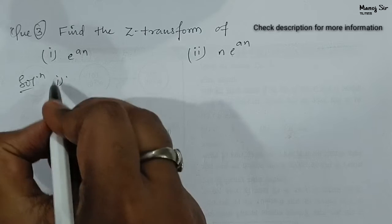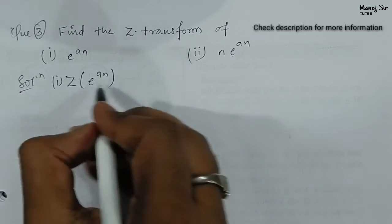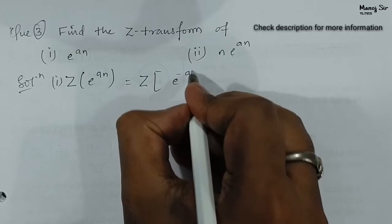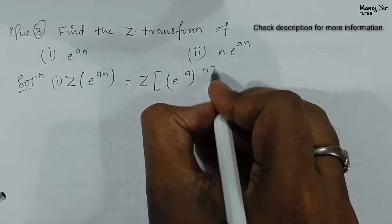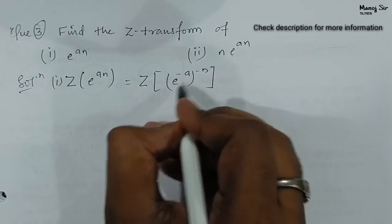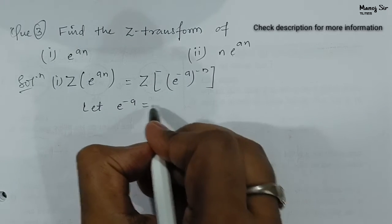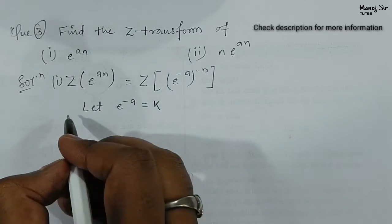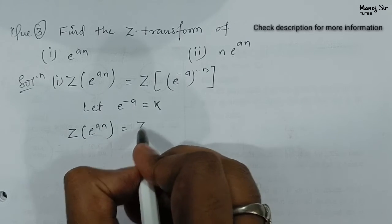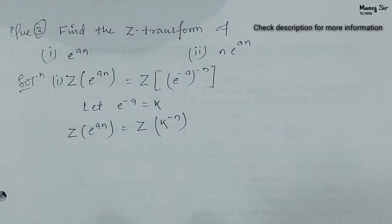First, we need to find the Z transform of e to the power an. We can rewrite this as Z transform of e to the power minus a, to the power minus n, which gives us e to the power an. Let e to the power minus a equals small k. Then Z transform of e to the power an equals Z transform of k to the power minus n.